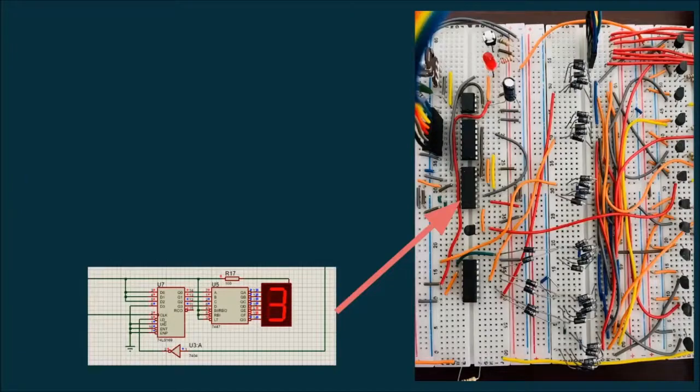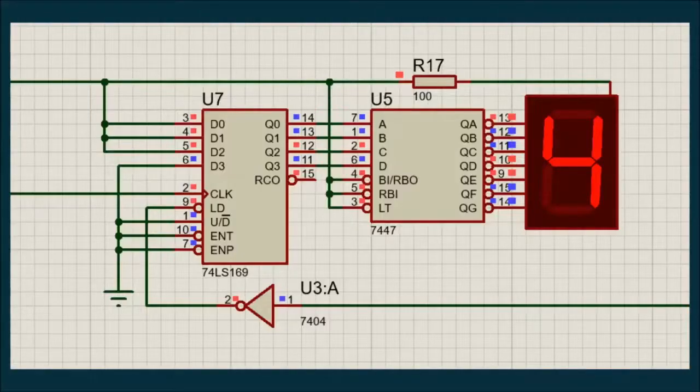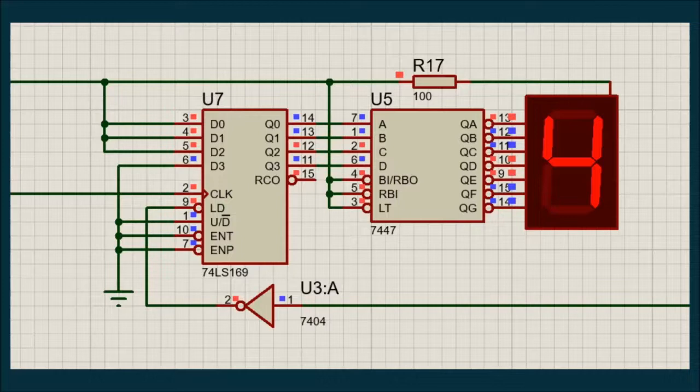For the countdown timer, we have used down counter 74169 and the decoder 7447. The 74169 down counts only when the input at the first pin is low. We have used the 9th pin which is at the input end. We have connected one of the outputs of our decade counter into this pin through a NOT gate. This is important for simulating the behavior where it will only down count from 6 seconds after the signal is red.